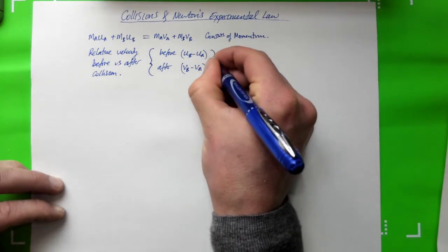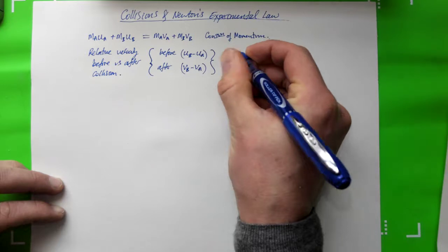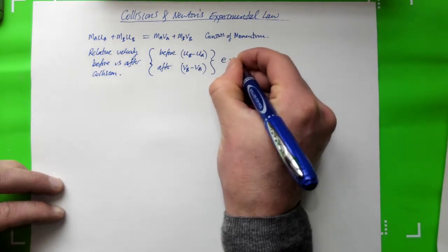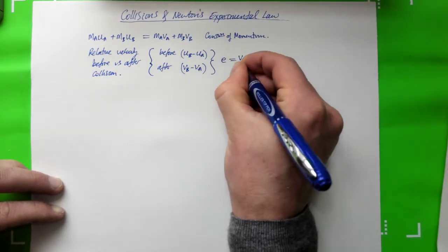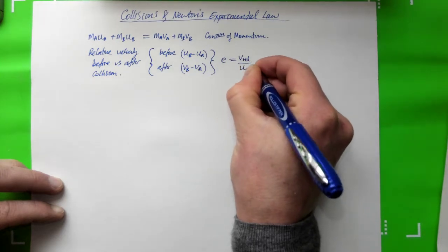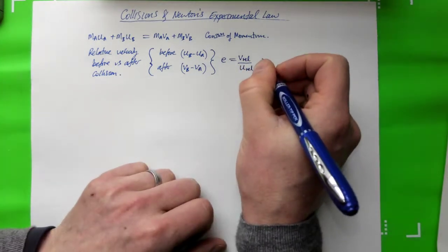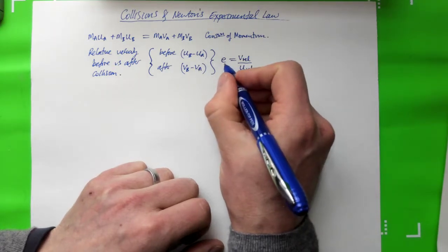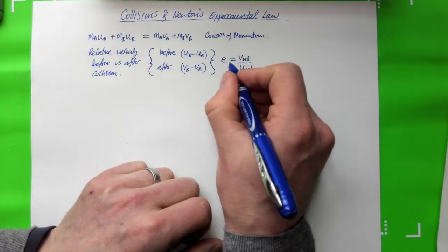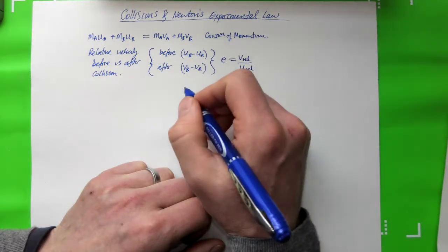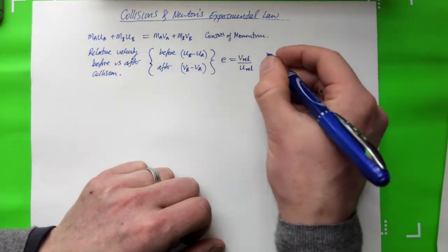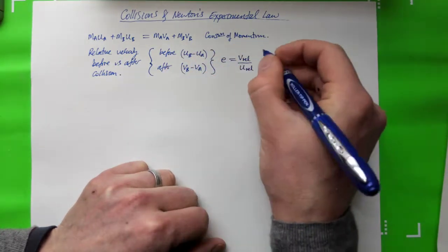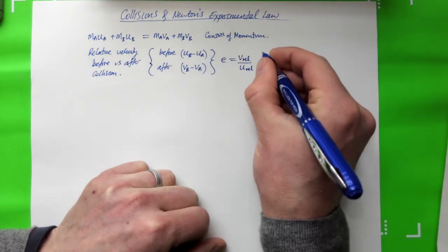So that's what Newton did. He said, let's define a new thing, E, the coefficient of restitution, which is equal to V rel over U rel, the relative velocities before and after the collision. And typically this number is one for a perfectly elastic collision, and then for collisions in the real world, it's typically somewhere between zero and one. So let's write that out in terms of these expressions here to get our new law called Newton's experimental law.